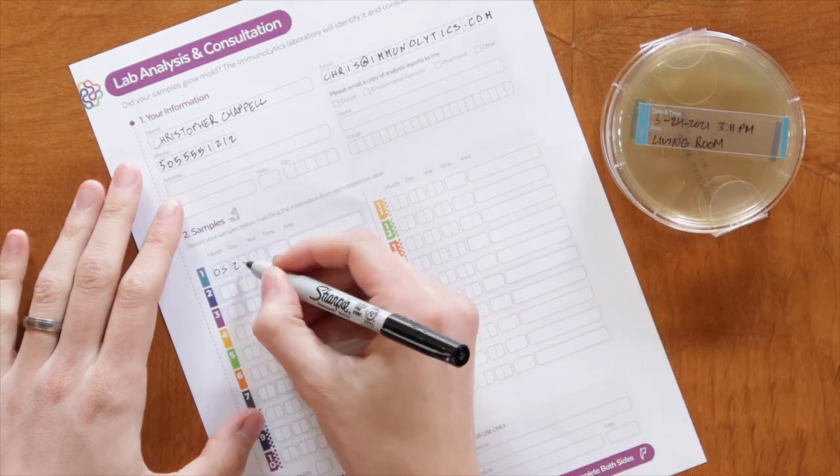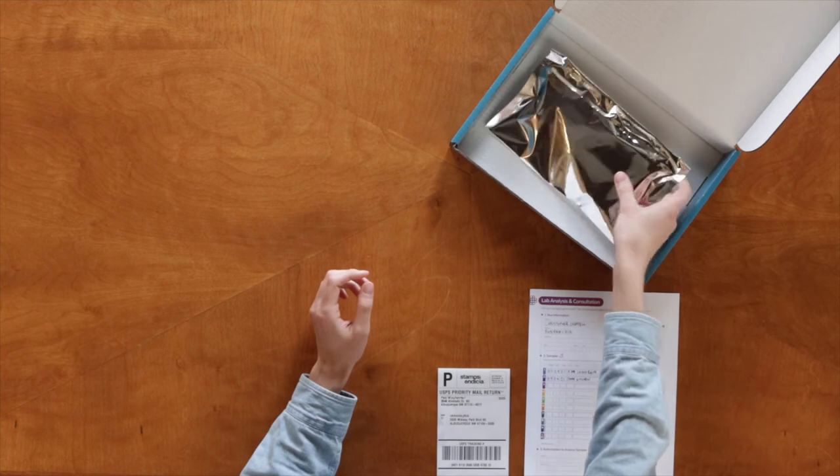First, ensure the lab processing form is completed fully and each sample on the form matches each sample label. Then place your samples in the foil envelope. Then place the foil envelope and your mold testing form into the mold testing kit box together with some appropriate packing materials and then affix the prepaid envelope or ship it yourself to the Immunolytics lab.